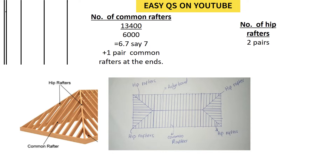We are told that the spacing of the common rafters is two meters, so we shall take 13,400 divided by 2,000, which gives us 6.7. Rounded off, that is seven.